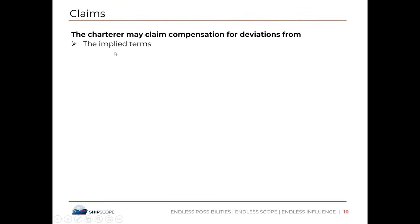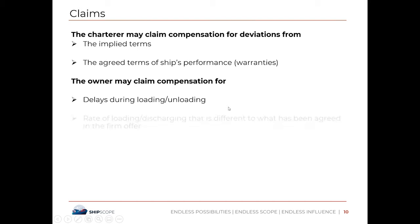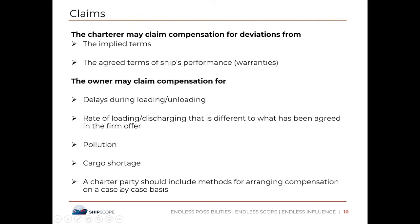The charterer may claim compensation for deviation from implied terms or agreed ship performance. As discussed, a charterer under a time charter party — who is paying the variable fuel cost — can claim compensation if the ship is not meeting the desired criteria. The owner may also claim compensation for delays during loading and unloading, for pollution, cargo shortage, and other matters different from what was agreed.